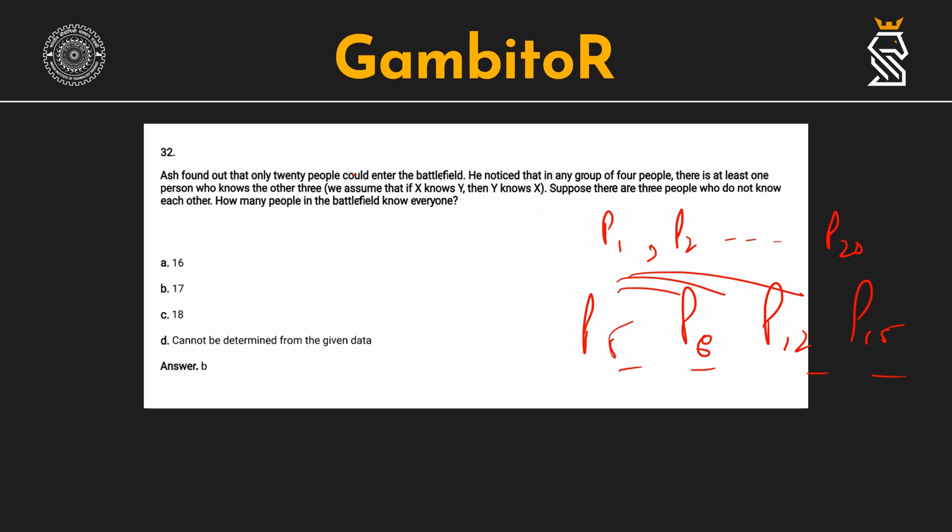And if x knows y, if P5 knows P8, then P8 also knows P5. So, it goes two-way. However, it is given that there are 3 persons P1, P2 and P3 who do not know each other. So, P1 does not know P2, P2 does not know P3 and P1 does not know P3.